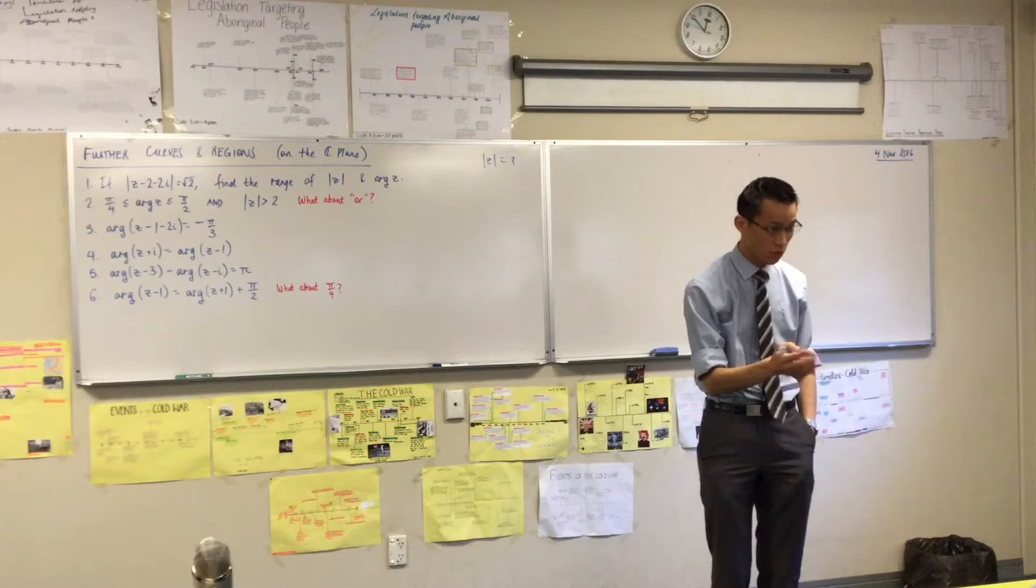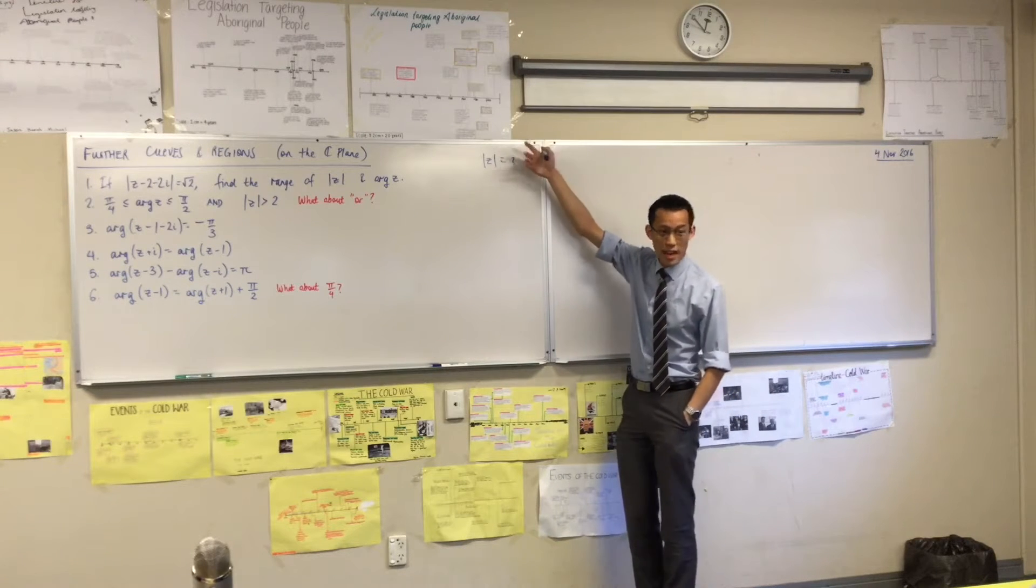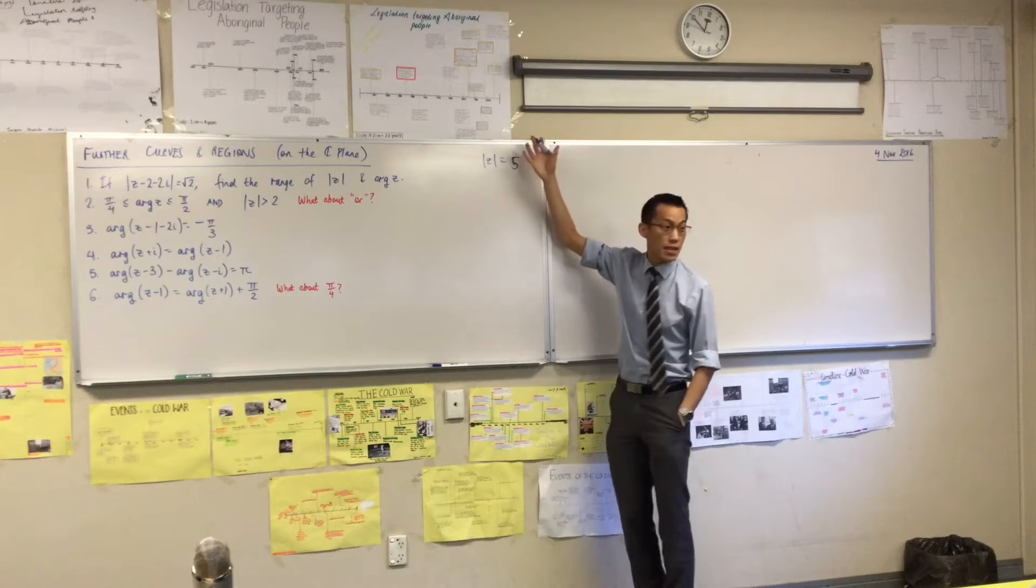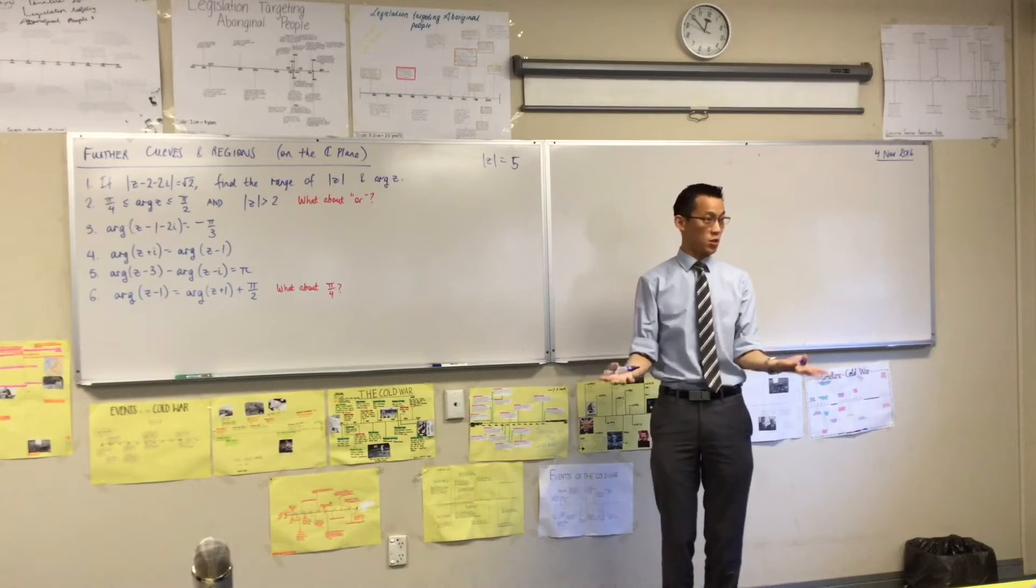You get a circle. And the reason why is because you're measuring a distance from the origin, and you're saying, I want that distance to always be the same number. And that traces out, that's the radius then. So there's your circle.